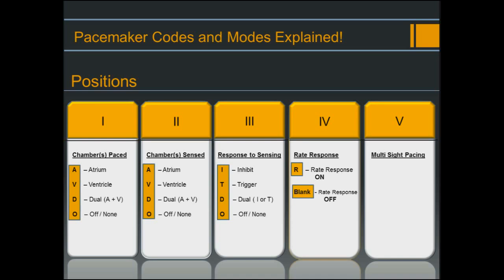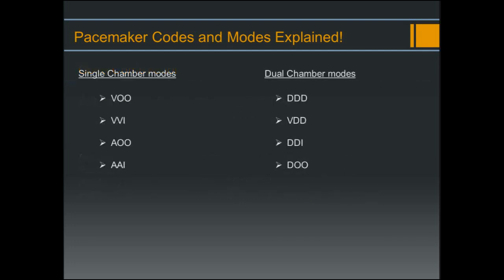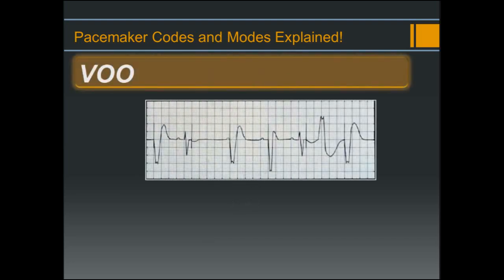To review: each of the positions of the NBG code is assigned a letter, and it is the combination of those letters that describes how the pacemaker will function. Position one is the chamber or chambers being paced, position two is the chamber or chambers being sensed, position three is the response to sensing, and position four is rate response or rate adaptive pacing. From the different letter combinations, the pacemaker has several modes. It's easier if we break those modes up into single chamber modes and dual chamber modes. The single chamber modes are VOO, VVI, AOO, and AAI.